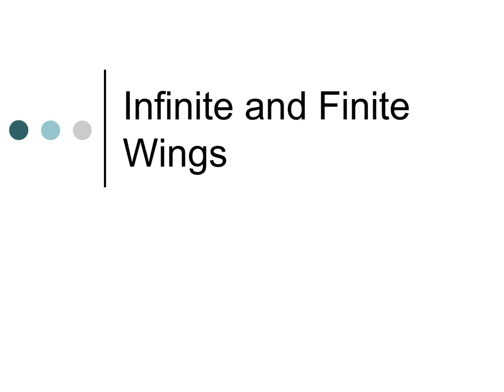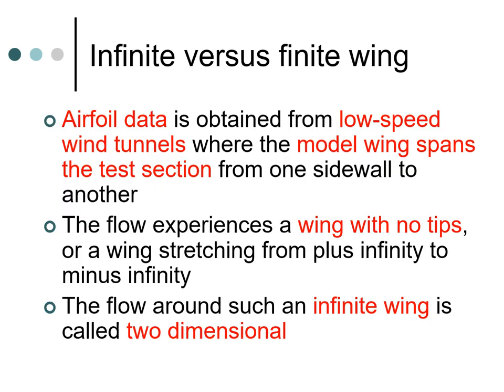Whenever you see an aircraft, for example, it obviously has a finite wing. The airfoil data such as the CL, CD, CM curves I discussed in the previous lectures are obtained from low speed wind tunnel tests. In these wind tunnels the model wing spans the test section from one side wall to the other, so the flow experiences a wing with no tips, or a wing stretching from plus infinity to minus infinity mathematically. The flow around such an infinite wing is called a two-dimensional flow, and a two-dimensional wing section is an airfoil section.